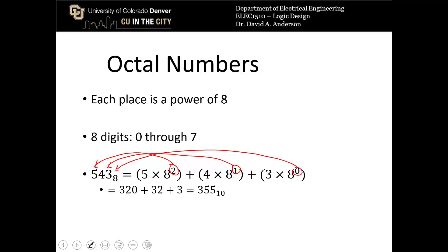So that equals 320, which is 5 times 8 squared, plus 32, which is 4 times 8 to the 1st, plus 3, and that comes out to 355 base 10. So 355 as a decimal number.